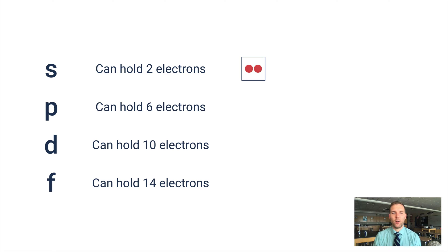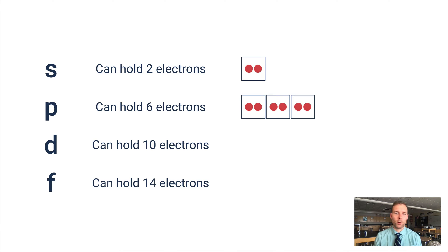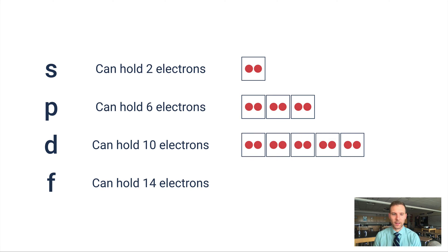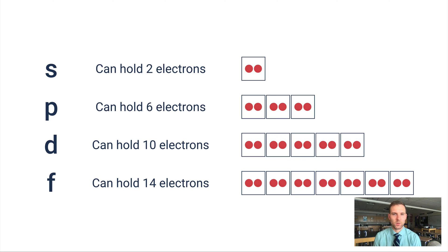The S subshell has only one orbital, so it can fit two electrons. The P subshell has three orbitals — two electrons per orbital, three times two is six. The D subshell has five orbitals, that's ten electrons. The F subshell has seven orbitals, equating to 14 electrons. These are all the maximum amounts of electrons that can fit in each subshell.